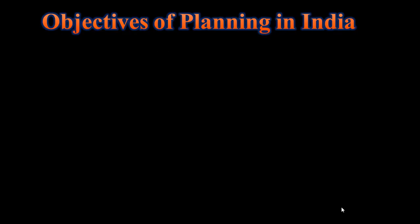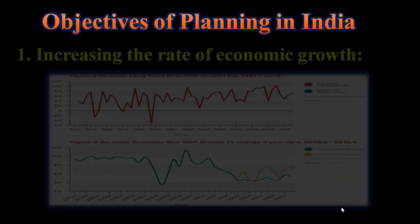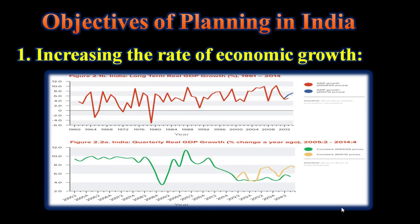Here are some of the objectives of planning in India. The first objective is increasing the rate of economic growth. The increase in national income was planned for bringing down poverty.